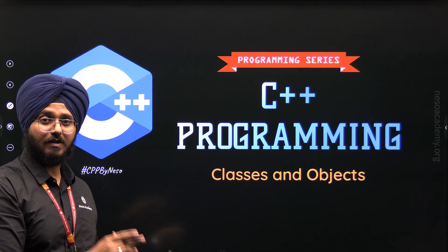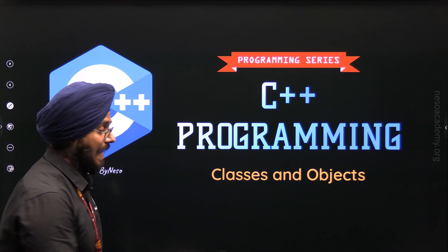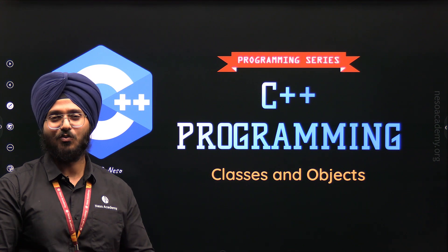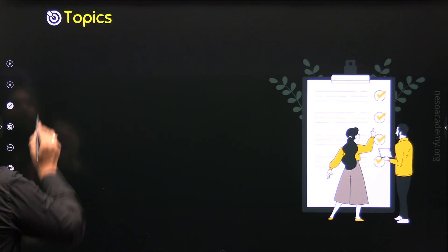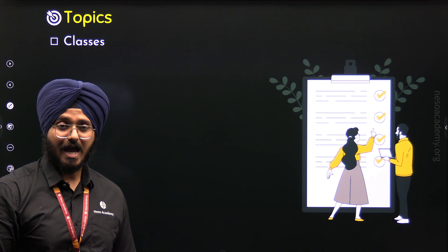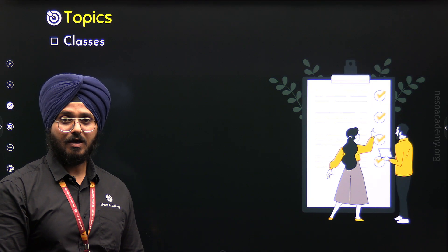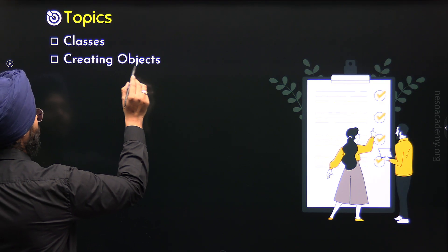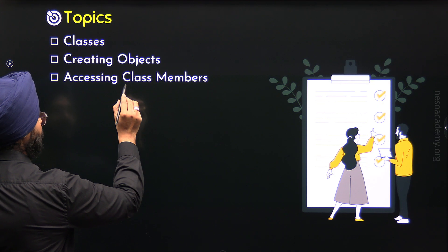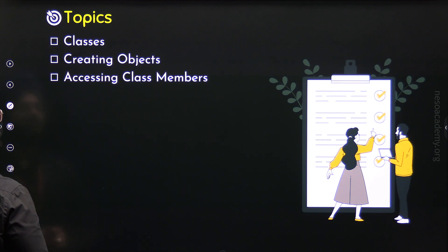In this lecture, we will understand the two most important elements of object-oriented programming — Classes and Objects. Without any further delay, let's get started. The first topic is Classes, where we will understand what classes are and how to define them. Then we will move to the second topic on how to create objects of classes. Finally, we will understand how to access members of a specific class.